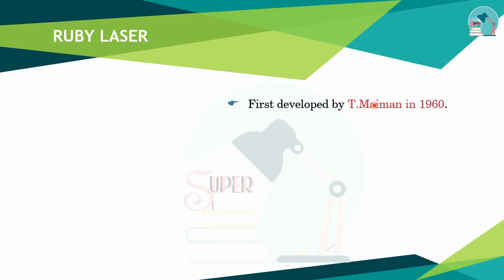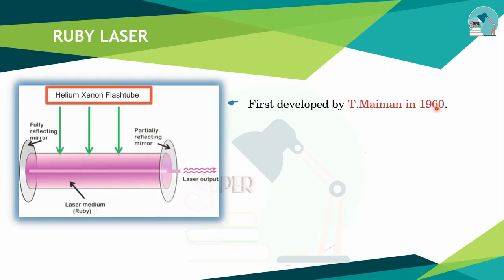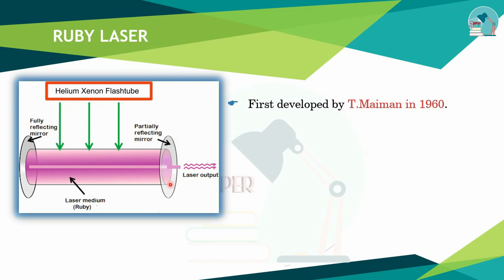Ruby laser was first discovered — it is called the Ruby laser. It was invented by Theodore Maiman in 1960. The Ruby laser construction consists of a laser medium, a helium-xenon flash tube surrounding it, and two sides with reflecting mirrors — one side is a full coat (fully reflecting mirror) and the other is a partial coat (partially reflecting mirror).